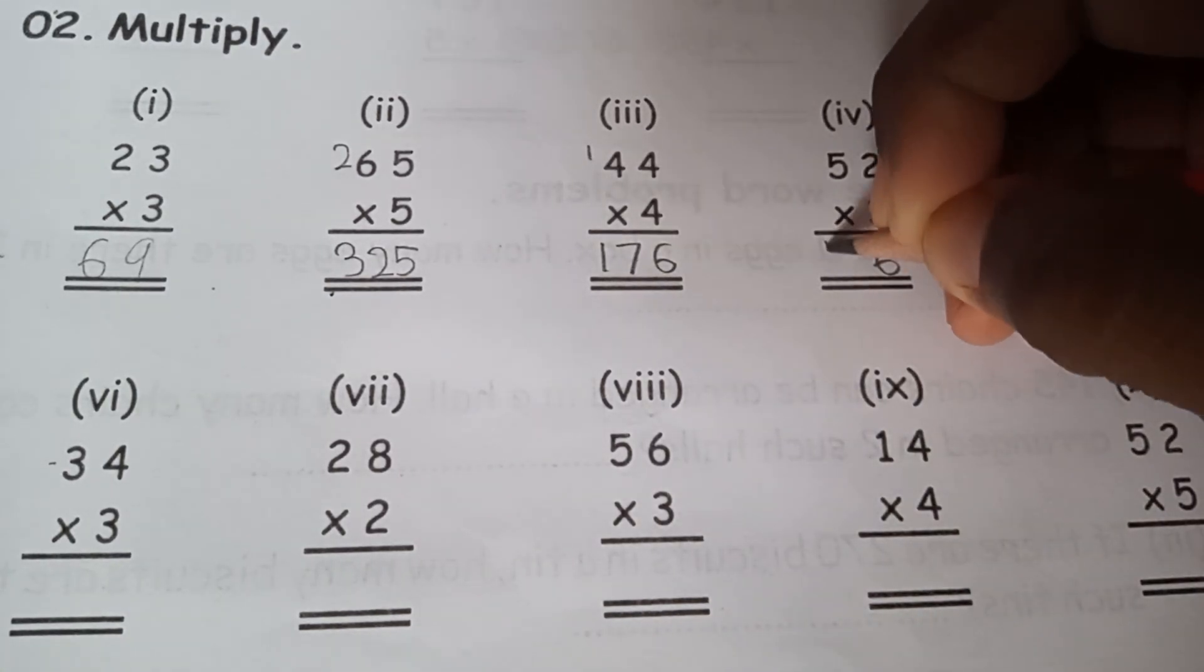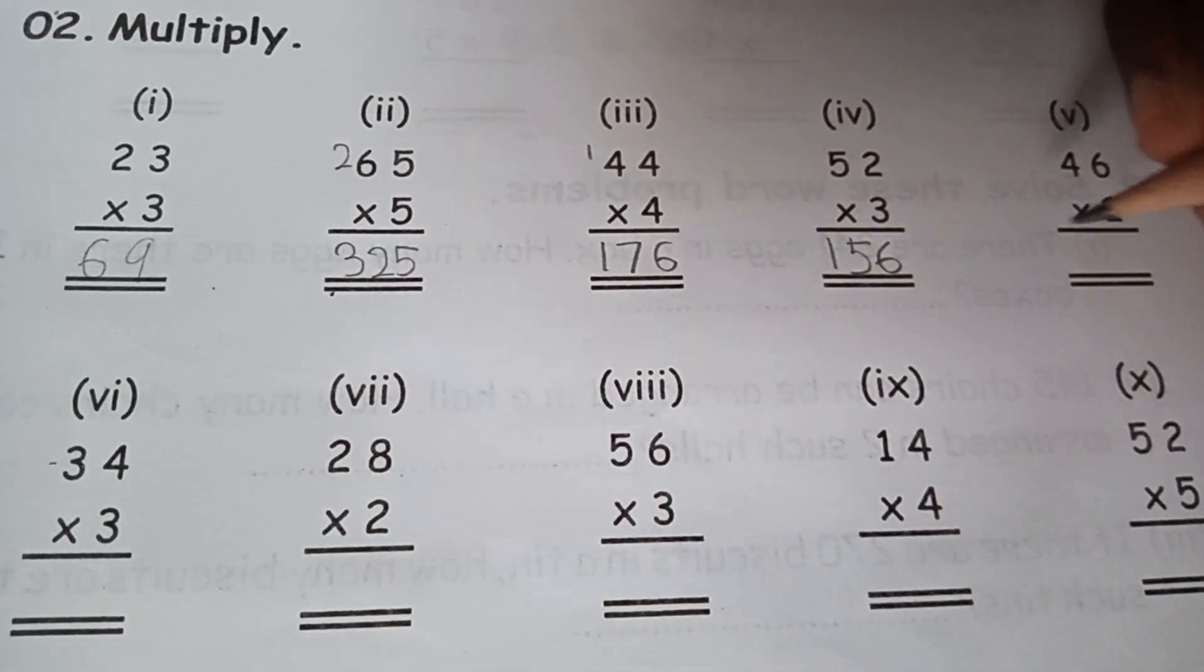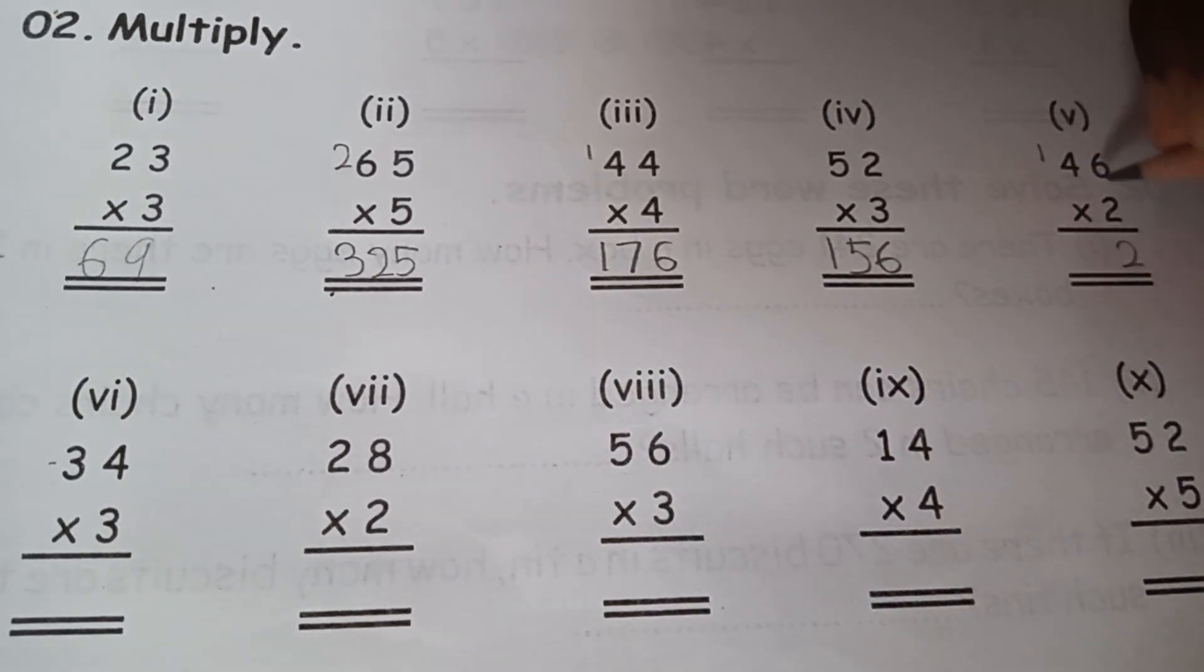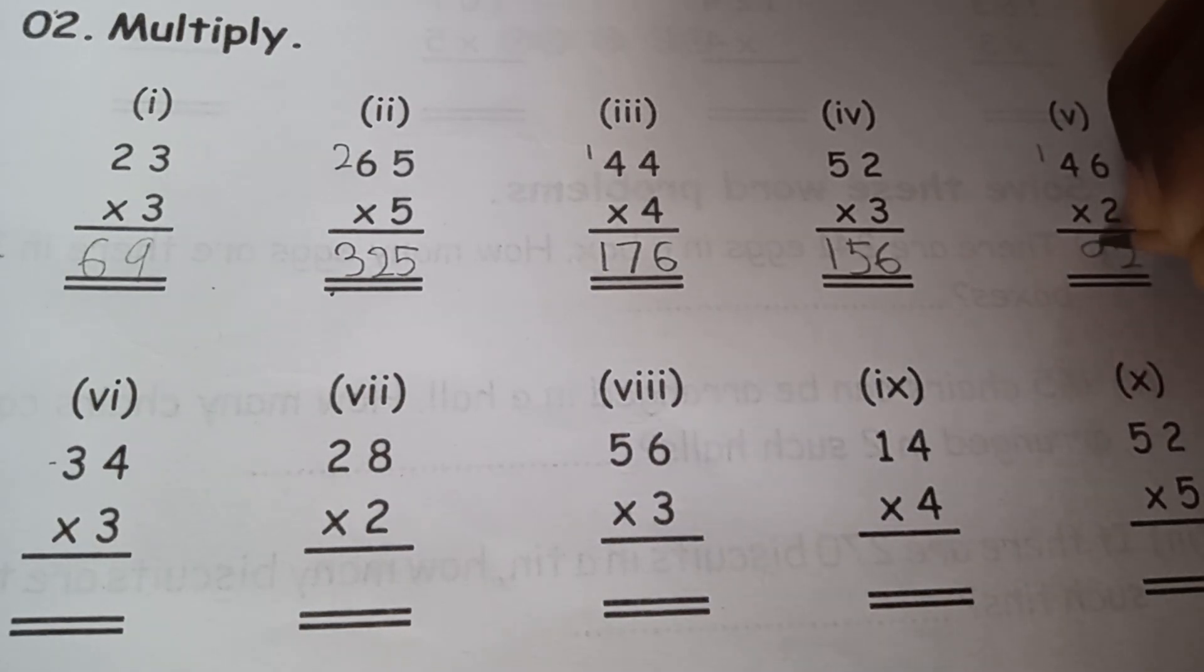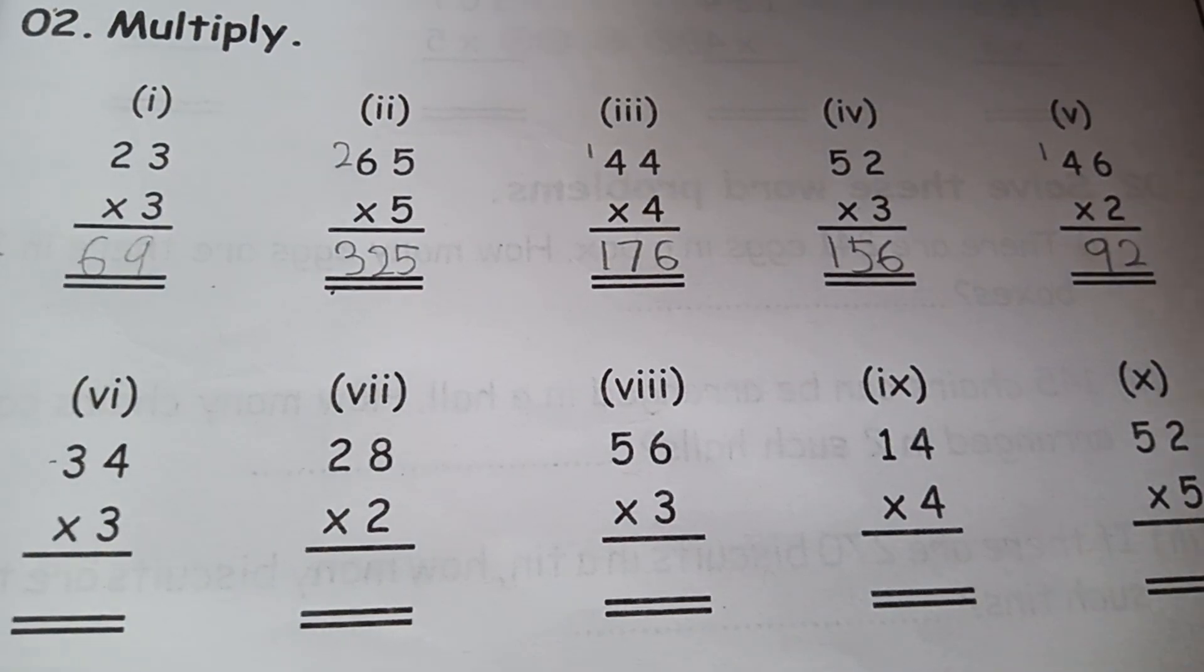Next one: 2 times 6 is 12, 1 will be over here. 2 times 4 is 8, 8 plus 1 is 9, so the answer will be 92. Good, very good. The next one.